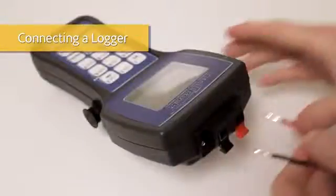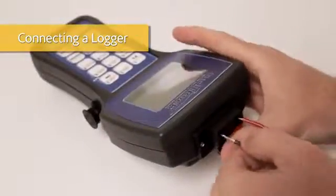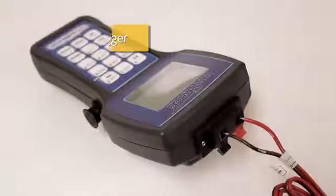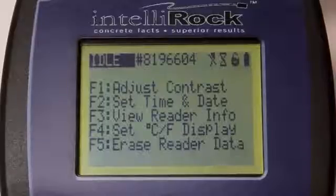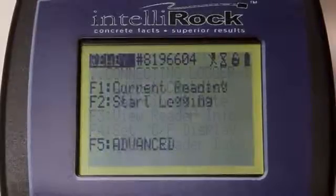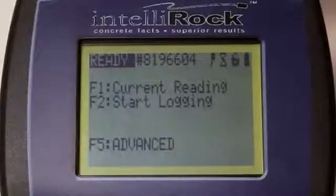Connect the logger to the reader by attaching the red wire to the red clip and the black wire to the black clip. The reader will automatically recognize the connected logger and the options in the main menu will change.